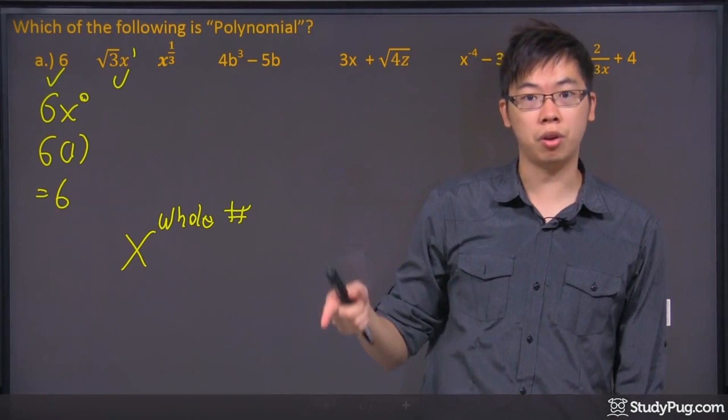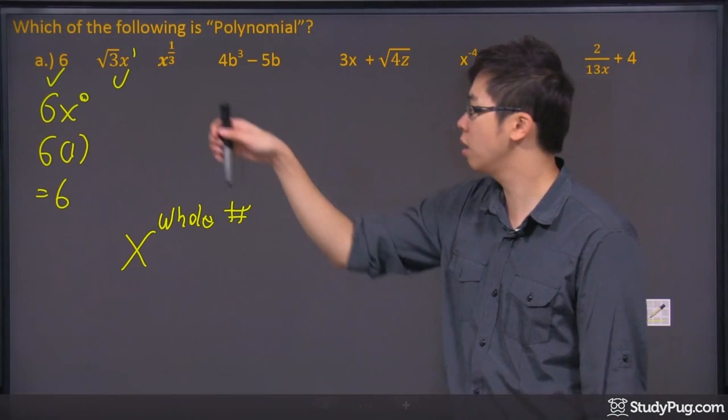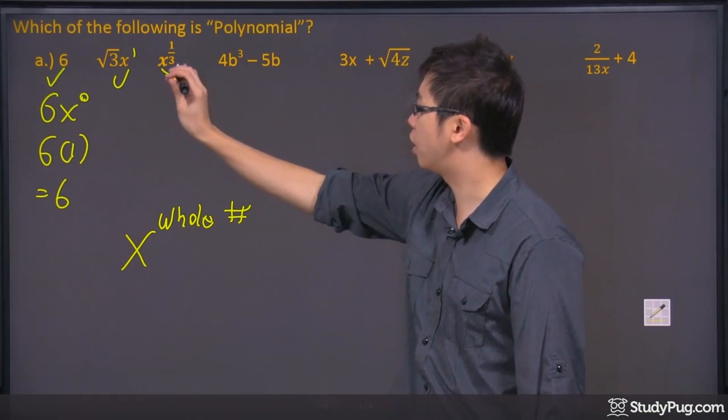This one over here is x to the power of 1/3. Aha, it's not a polynomial because we cannot have a fraction. So because of that, this is not a polynomial.